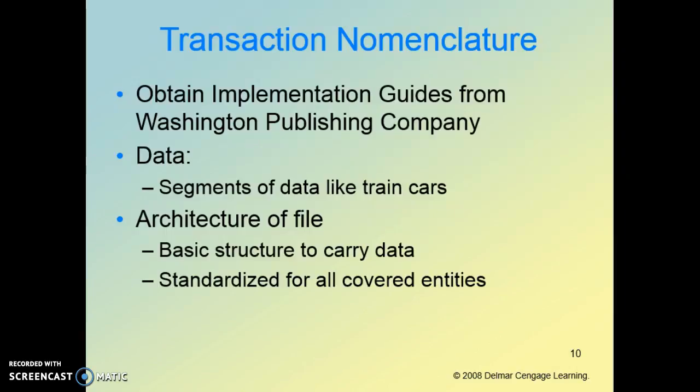You're going to begin on page 65, which actually kind of starts on page 64, where we start talking about ASCX 12 nomenclature. Basically what that means is we're going to be looking at everything that runs how transactions go through the system. Everything has to be done with a specific format in order for it to work smoothly — everything has to be standardized. That's the key here.